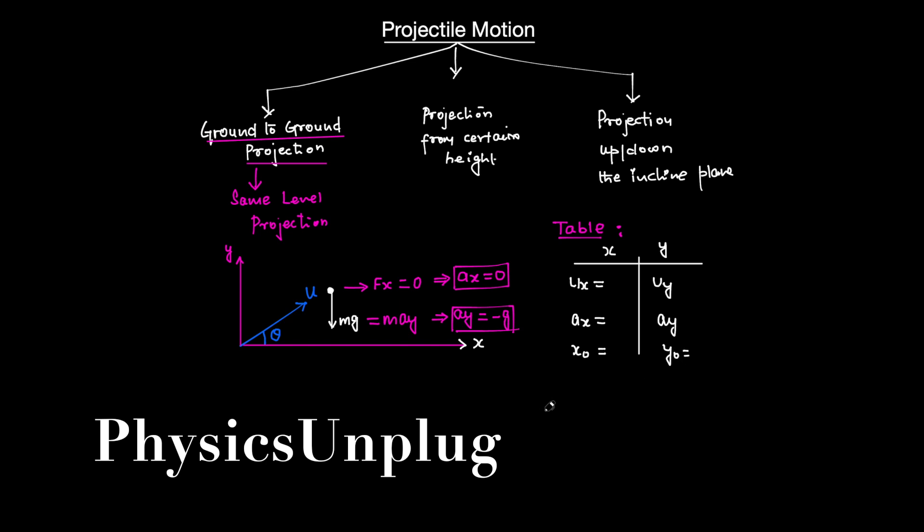This is a case of 2D motion. If you visualize it simply, the y-component is taking the body in the y-direction and bringing it back, but the x-component is taking the particle in the x-direction. Simultaneously, the particle is moving in two directions, so it is motion in 2D. That's why I am taking the two directions separately.